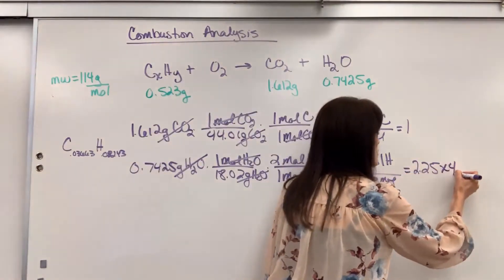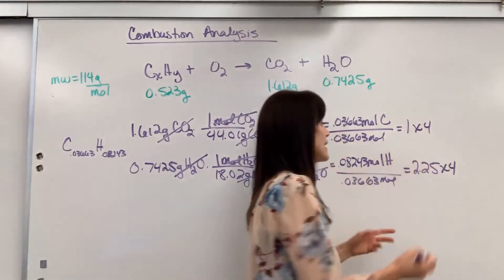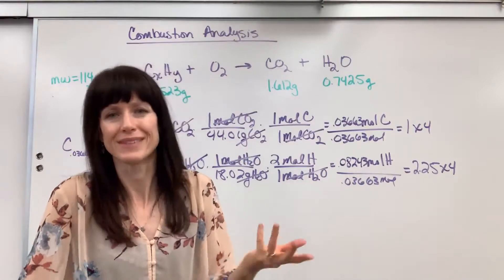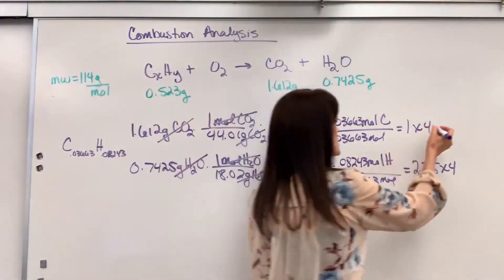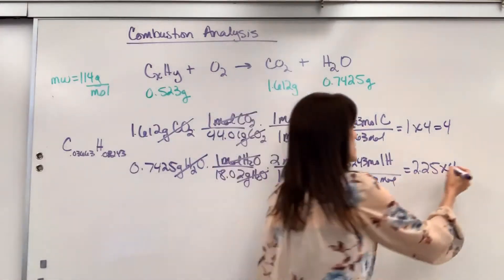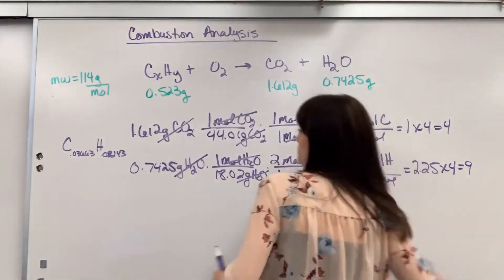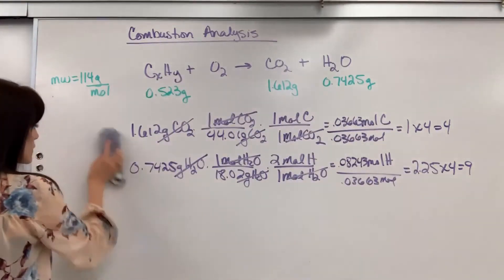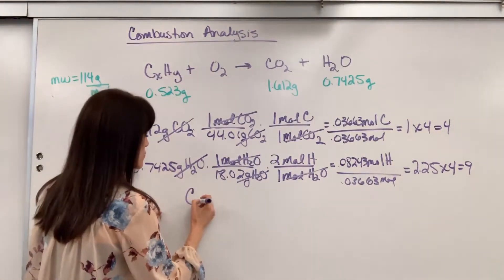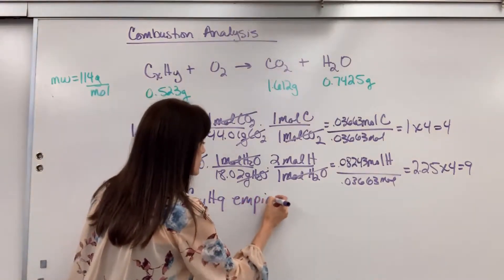To get it to a whole number, I have to multiply it by 4. How I did that in my head, I was thinking, what do I multiply 0.25 by to get a whole number? The answer is 4. So we're going to get a 4. 4 times 2.25 gives us 9. And there we have it, our molar ratio. So that means the formula is C4H9. And remember, that is the empirical formula.